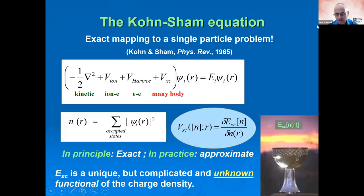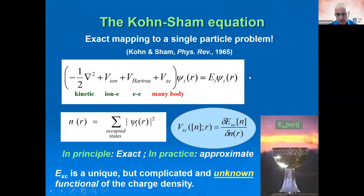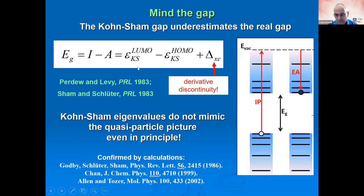In Nicola's talk, you've already seen the Kohn-Sham equation, which is an exact mapping to a single-particle problem — exact in principle, but needing approximation in practice. We don't know the exact exchange-correlation energy or potential, but we have useful approximations that get a large number of problems done very well with predictive accuracy. That's the good news. The bad news is there are some notable failures.